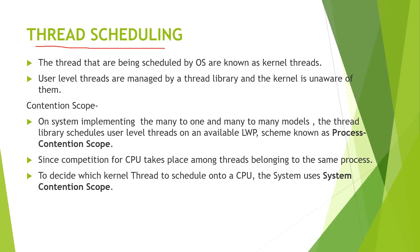What we have studied till now are the types of kernel threads which are handled or scheduled by the operating system. But there are other threads also which are scheduled by threading libraries. So the threads which belong to the same process are handled by thread libraries and are not handled by the operating system. There are two types of contention scope — the decision of whether this thread or that thread should execute is decided by contention scope.